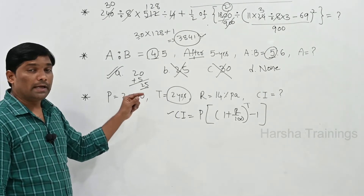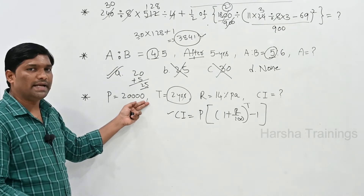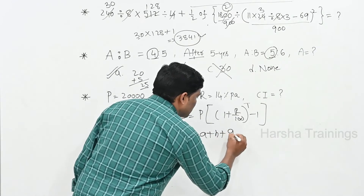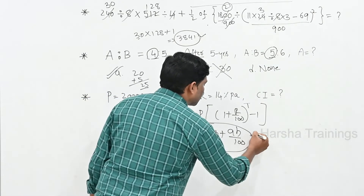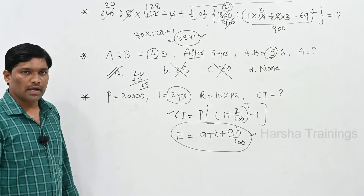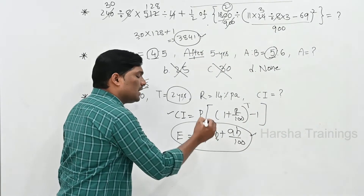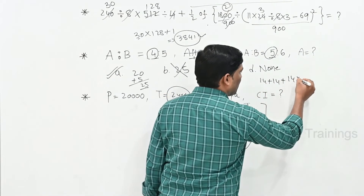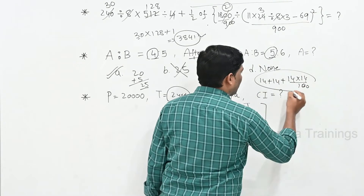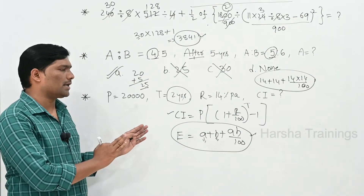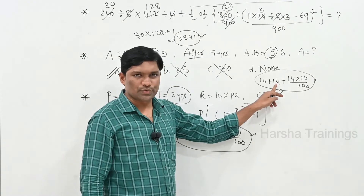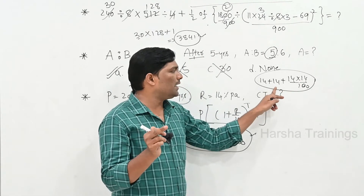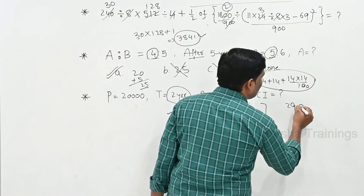Since it is a 2-year compound interest problem, we use the effective percentage formula: A plus B plus AB/100, where A and B are the rates for each year. Both years have 14% interest, so: 14 plus 14 plus (14 × 14)/100 equals 28 plus 196/100, which equals 28 plus 1.96, giving 29.96%.